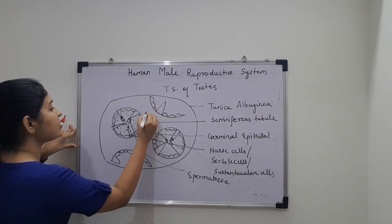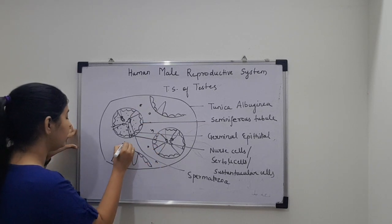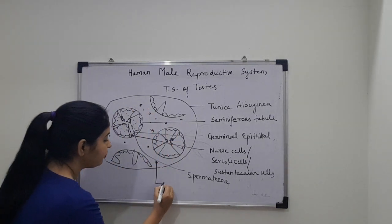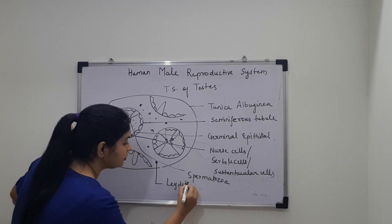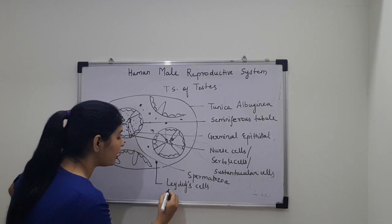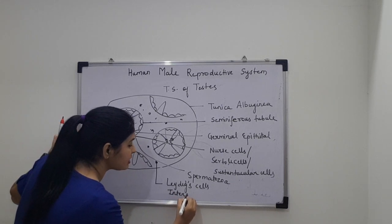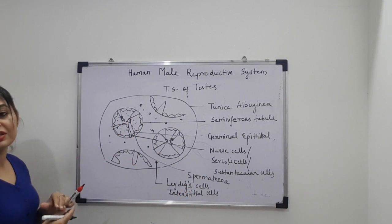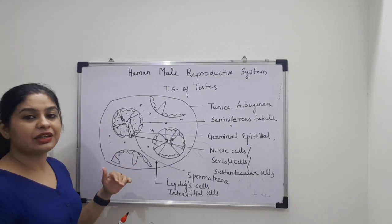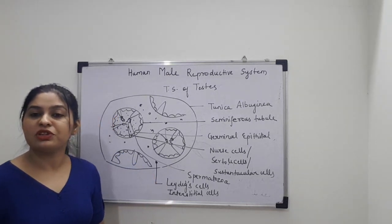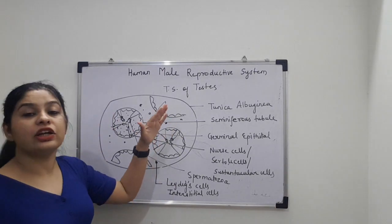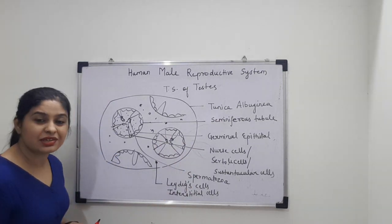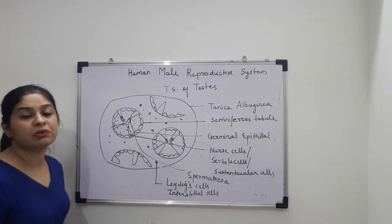Outside the seminiferous tubule, there are other cells called Leydig cells, also known as interstitial cells. These cells secrete the male sex hormone testosterone. So inside the testes, the process of sperm formation — spermatogenesis — takes place, and testosterone is secreted. That is the reason the testes is called the primary sex organ, as it participates in the process of reproduction directly.